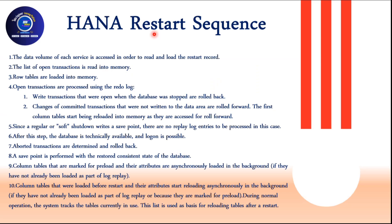Before we go forward, let's understand how the HANA restart sequence works. If you're going to start up a HANA database, the first thing to know is that HANA has a persistence layer. In the persistence layer, whenever there is a savepoint, the changes in memory get updated to disk and stored as a consistent state. That is called the persistence data volume - your HANA data volume. Whenever you start your database, the data volume of each service is accessed, because the savepoint is triggered service-wise.